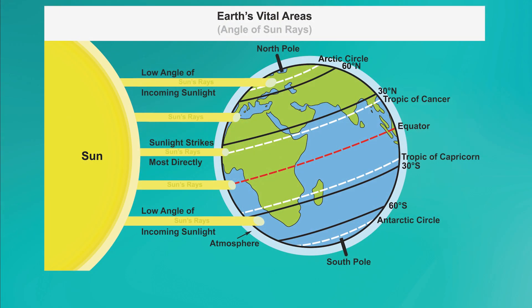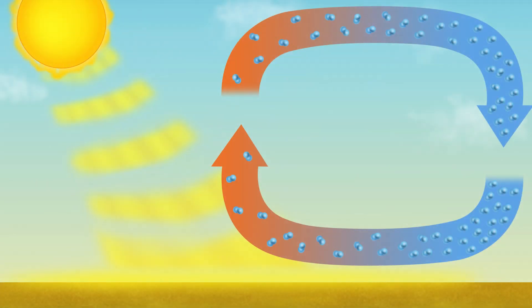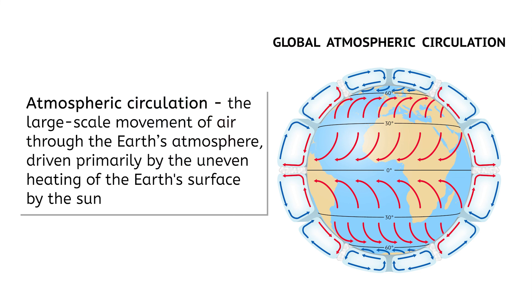The tilt of the Earth also has a big impact on wind. Not all areas on Earth receive the same amount of direct sunlight. The Earth's tilt causes uneven heating and therefore different convection currents at different latitudes. These convection currents create a continuous loop of air movement — this is atmospheric circulation, the large-scale movement of air through the Earth's atmosphere, driven primarily by the uneven heating of the Earth's surface by the Sun. This circulation redistributes heat from the equator to the poles and plays a crucial role in determining global weather patterns and climate.